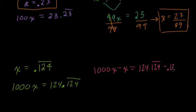And why is that? Well, why do we want to multiply so our decimal moves past the repeating sequence? When we set up these equations, here we'll set up 1,000x minus x, and that equals 124.124 repeating minus 0.124 repeating.